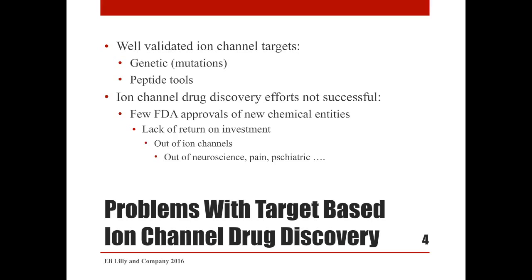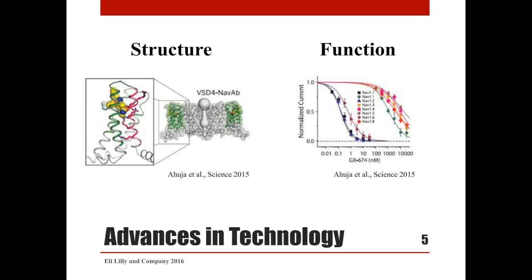Target-based ion channel drug discovery efforts have not been very successful, reflected in few newly approved drugs and lack of return on investment, causing a shift in research investment away from ion channel research. Meanwhile, scientific advances in our understanding of ion channel structure and function advance rapidly, largely due to technological breakthroughs such as the ability to solve crystal structures for ion channels. The example on the left shows binding of an arylsulfonamide to the binding pocket on the voltage sensor domain 4 of chimeric NAV1.7.